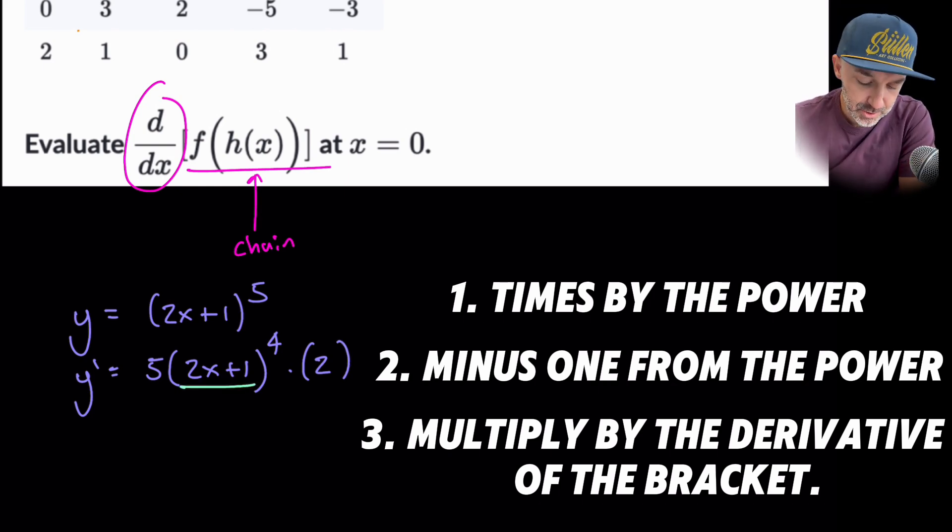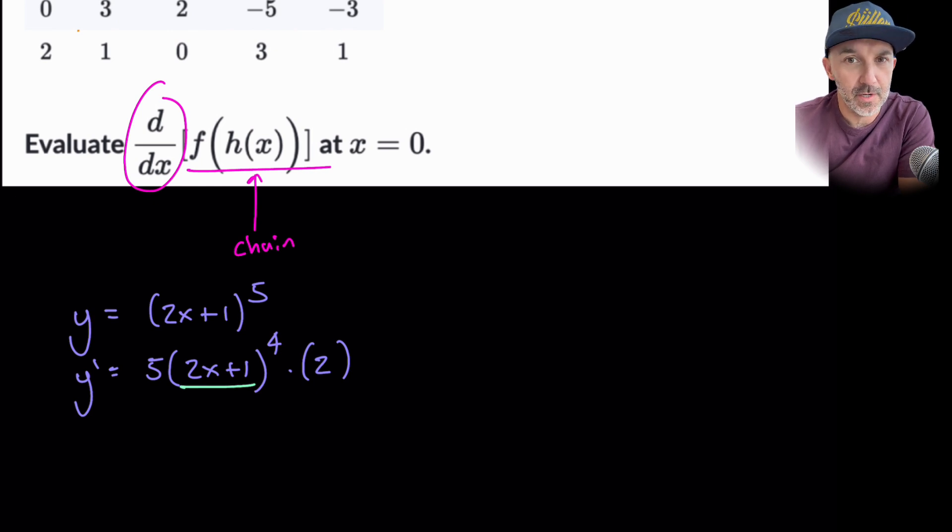So that's essentially letting u equal 2x plus 1, doing du by dx and then timesing it by dy by du. That is chain rule. But it's a quick version of chain rule.